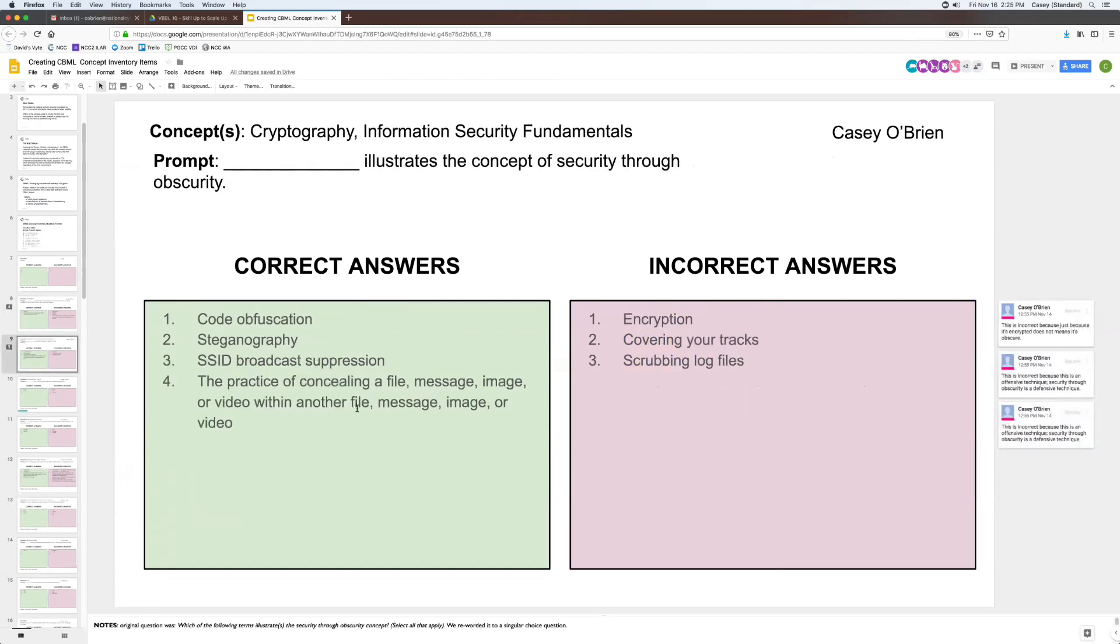And then slide nine shows another example of how we took an original question, which was quote, 'Which of the following terms illustrates the security through obscurity concept, select all that apply,' end quote. And we reworded that to a singular choice question provided in this case a number of correct answers. And then with a number of incorrect answers. And again, then described why each of the incorrect answers was in fact incorrect. So David, I'll turn it back over to you. I'm going to stop sharing my screen now.